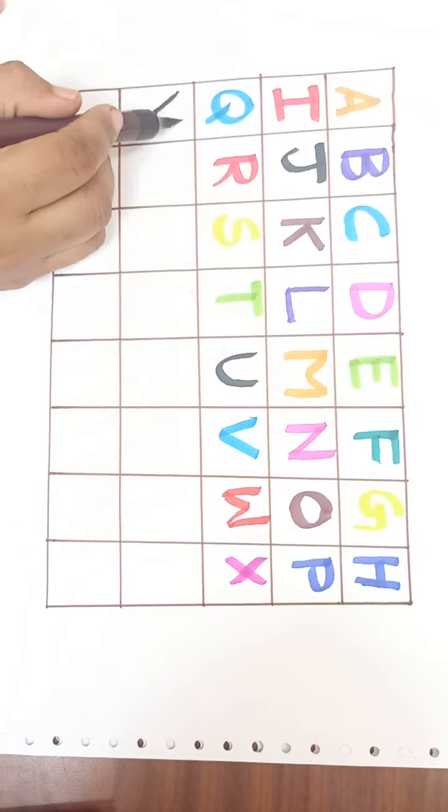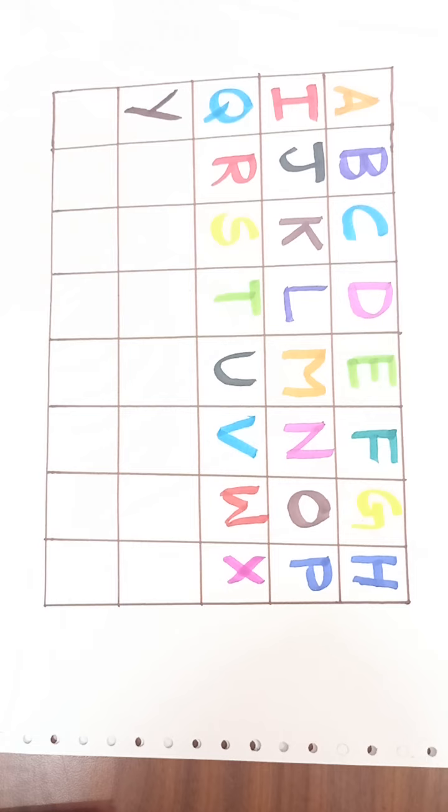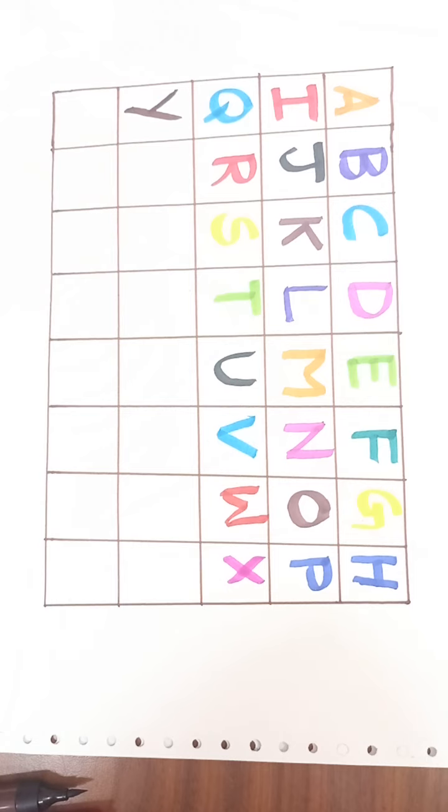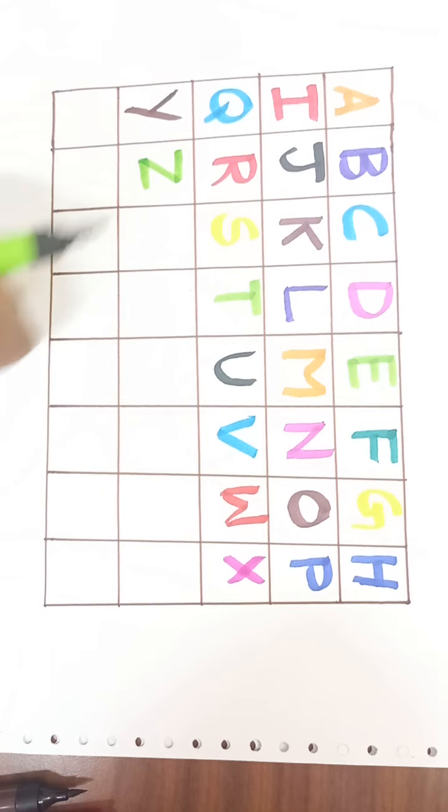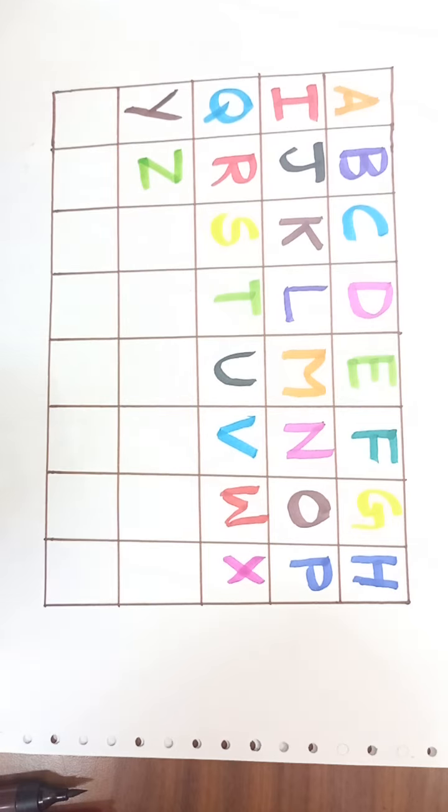Brown color. Y for yak. Y-A-K, yak. Light green color. Z for zoo. Z-O-O, zoo.